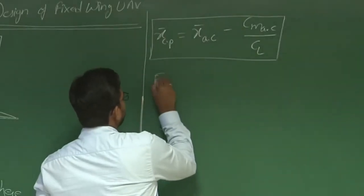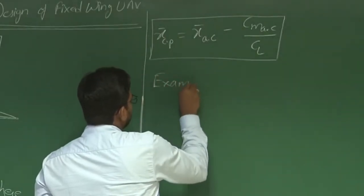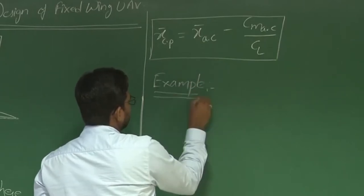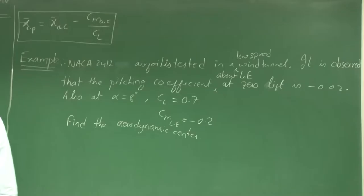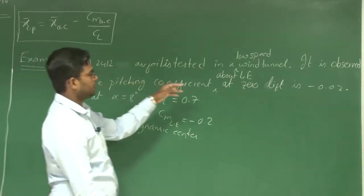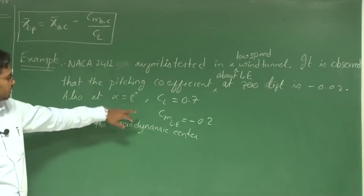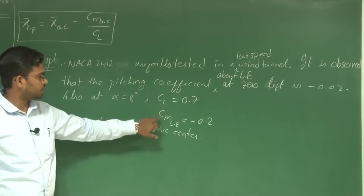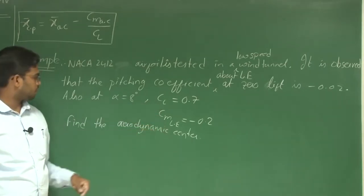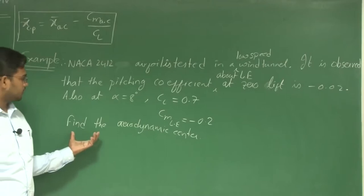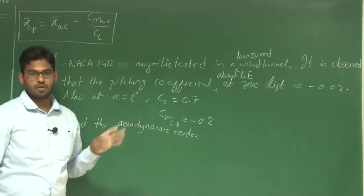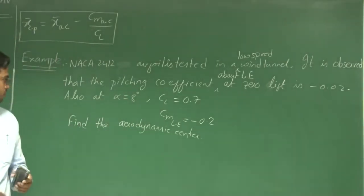Let us take an example. A NACA 2412 airfoil is tested in a low-speed wind tunnel. The pitching moment coefficient about the leading edge at zero lift is minus 0.02. Also, at alpha equals 8 degrees, C_l is measured to be 0.7 and C_m about the leading edge is minus 0.2. We have to find the aerodynamic center for this airfoil.